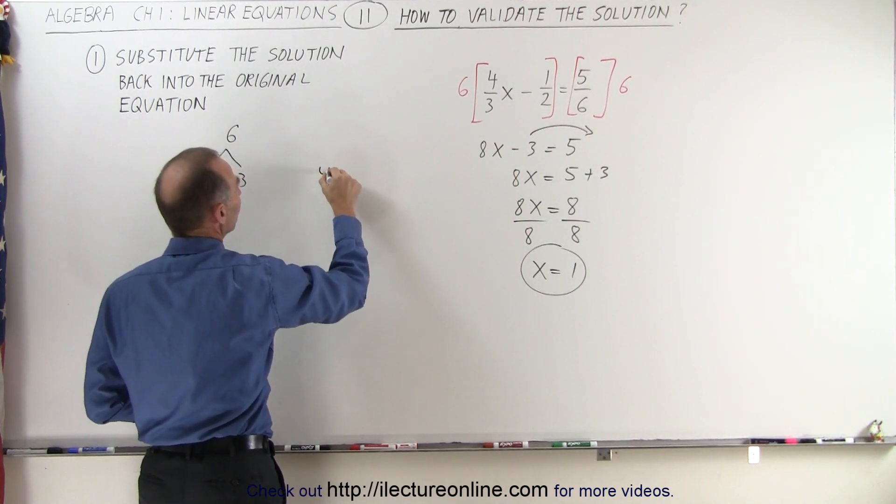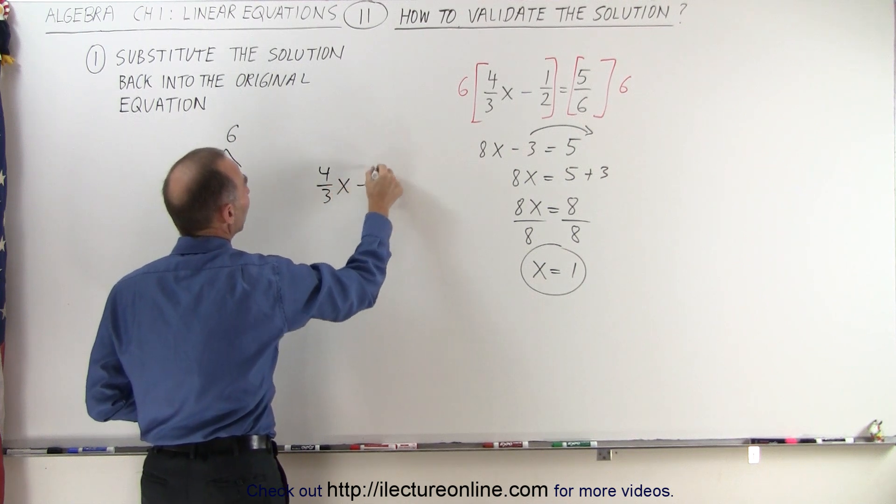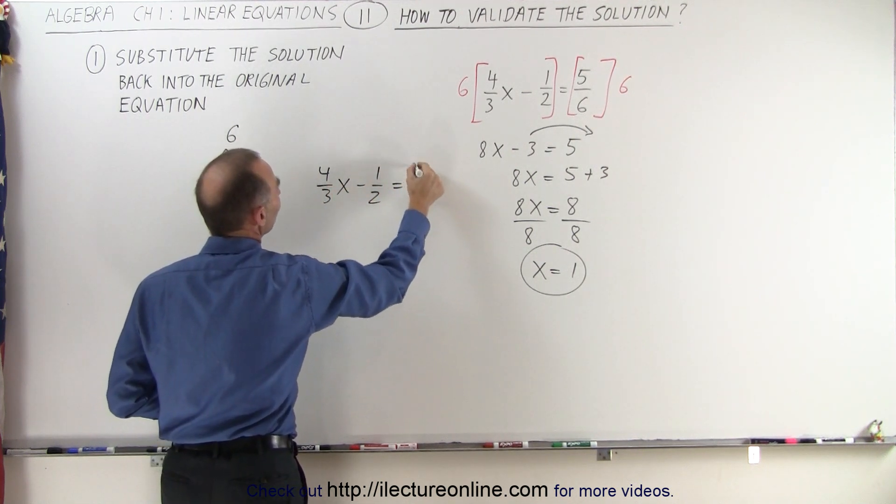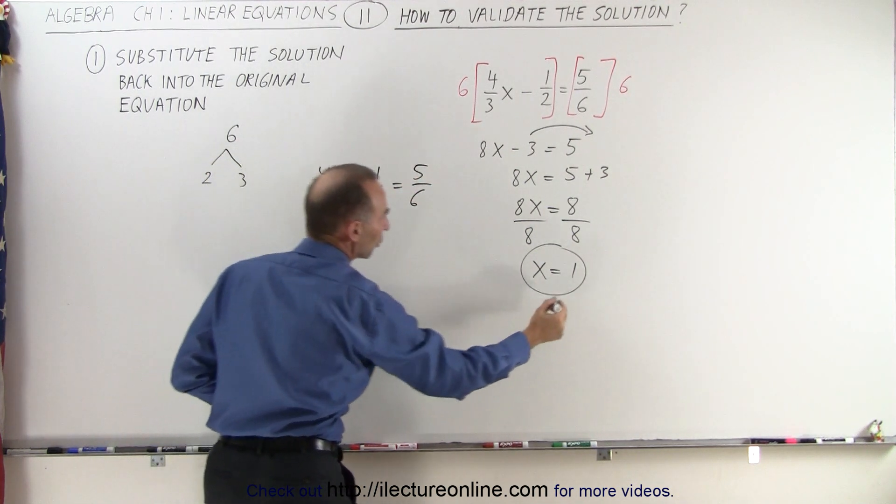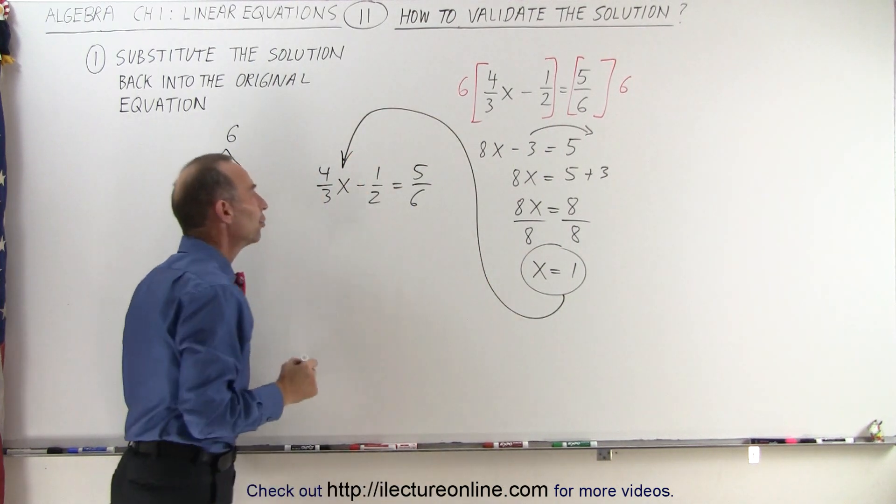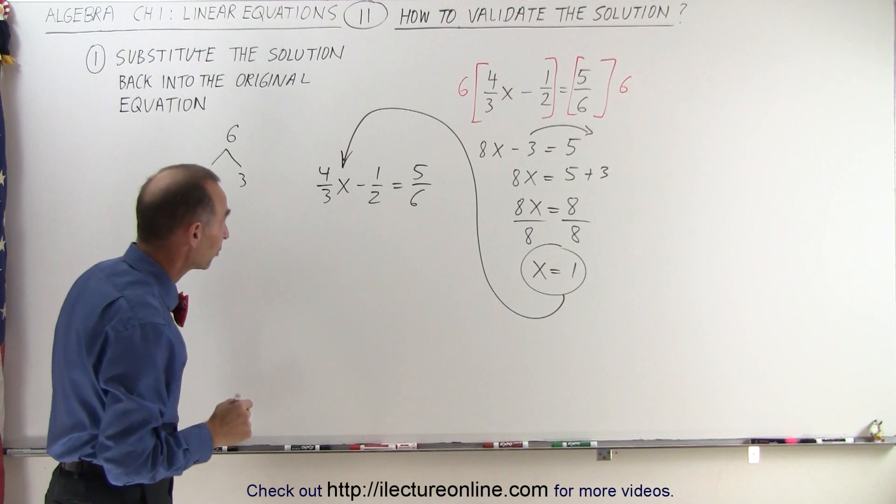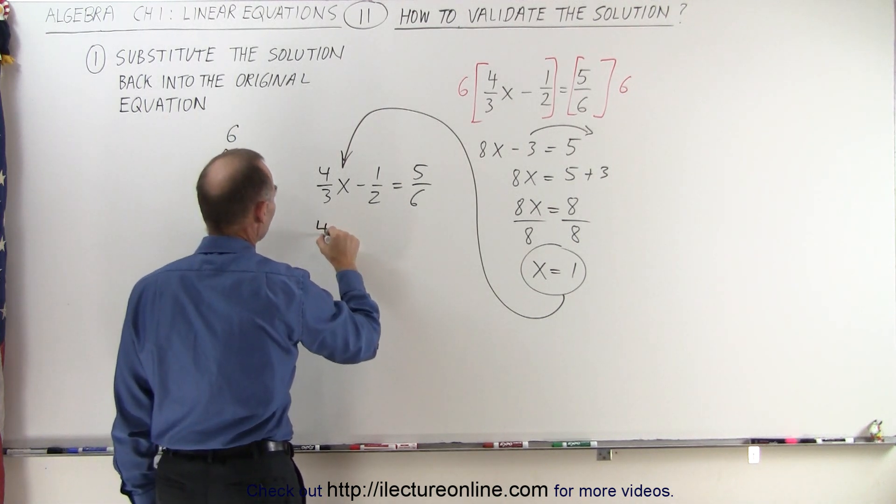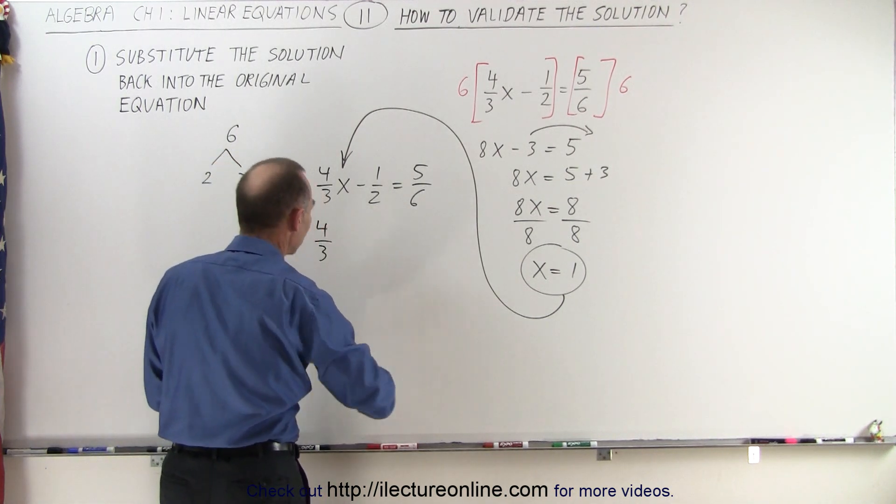So the original equation was 4/3x minus 1/2 equals 5 over 6, and what we're going to do is we're going to take the x equals 1 and plug it right back into the variable in our original equation, which means we can write that 4/3rds, and let's put it in red so we can see what we're doing.